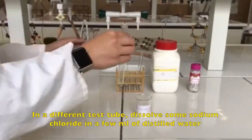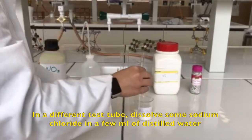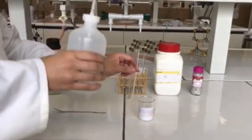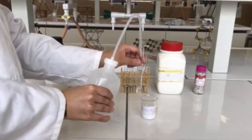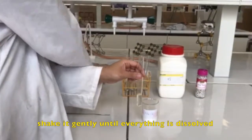In a different test tube, dissolve some sodium chloride in a few milliliters of distilled water. Shake it gently until everything is dissolved.